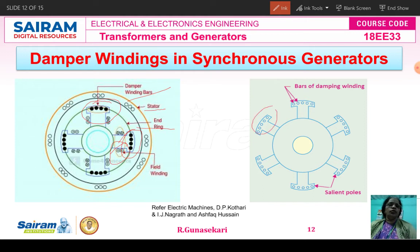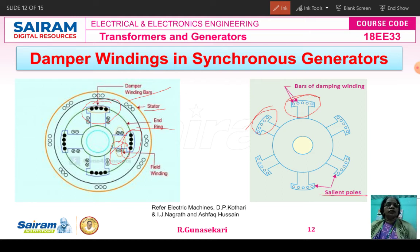This is the pole face of the salient pole generator — the poles are projected outward. This bar is the damper winding. The damper winding consists of copper bars which are short-circuited at both ends, which is why the damper winding is called a short-circuit coil. Because the poles are projected out from the machine, this is called a salient pole. The damper winding is placed on the pole faces of the synchronous generator.